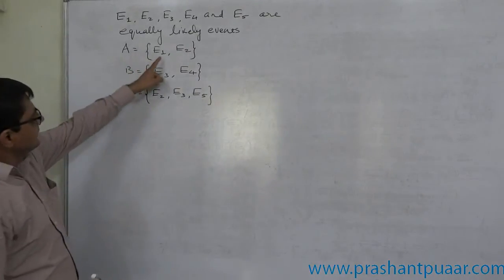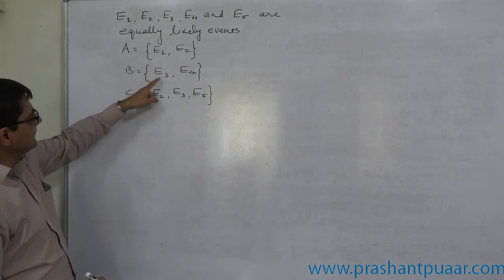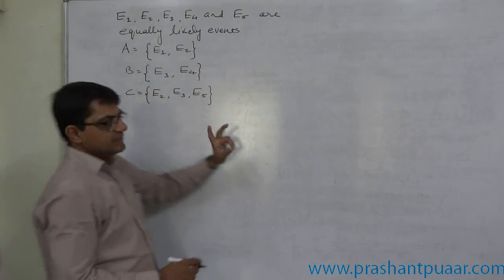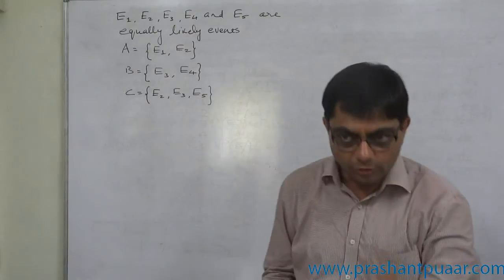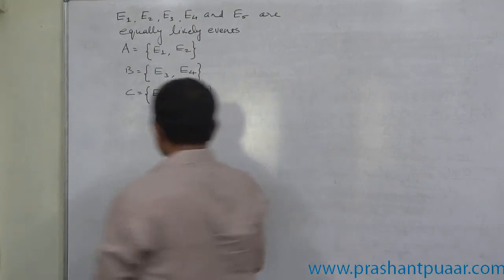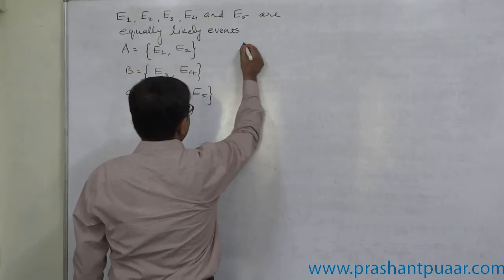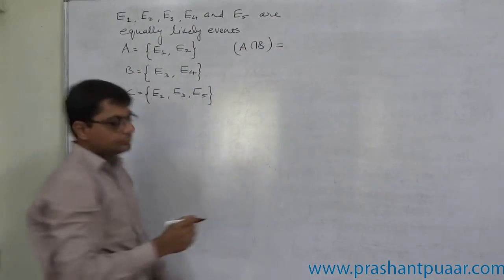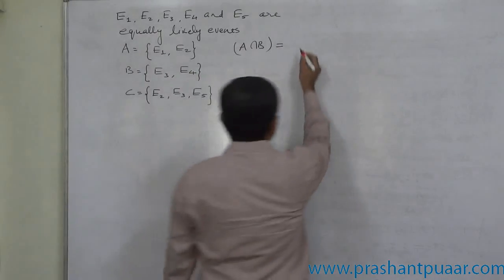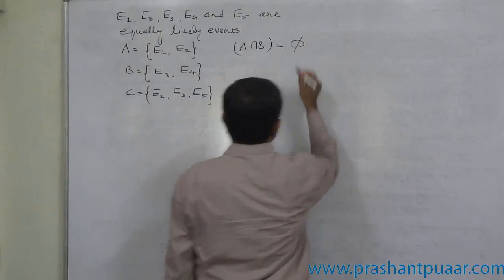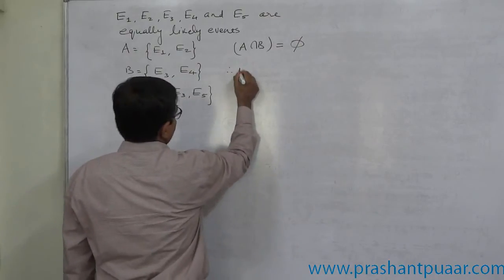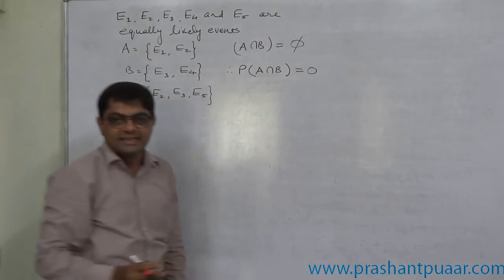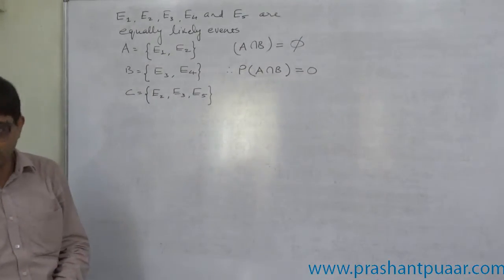A means E1 or E2; B means E3, E4. Is intersection of A and B possible? A intersection B has no common element. So it is a null set. That means probability of A intersection B is 0.